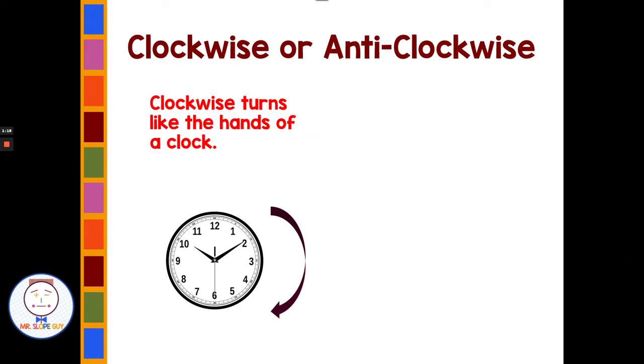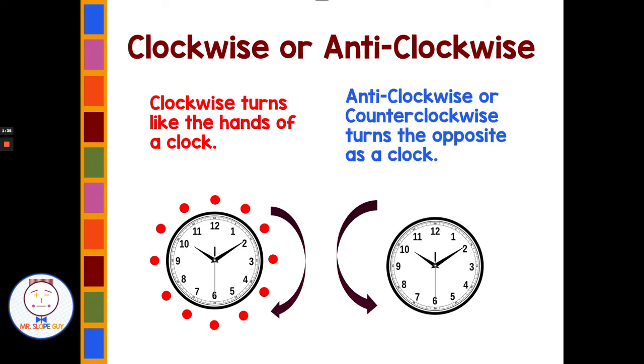Clockwise would be turning like the clock. If you look at any hand of the clock, it spins in this direction - clockwise. The opposite way, anti-clockwise or counter-clockwise, it's going to spin in the opposite direction of the clock. We would refer to that as orientation.